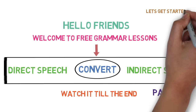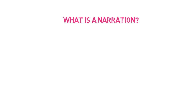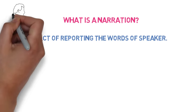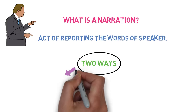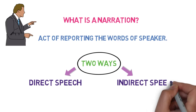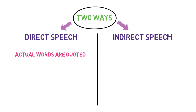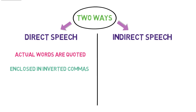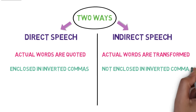Without further ado, let's get started. Let's first quickly remember what we learnt in our previous video. Narration is the act of reporting the words of a speaker — that is, how you are representing the way a person has spoken. There are two main ways of reporting the words of a speaker: first, direct speech, and second, indirect speech. In direct speech, the actual words of the speaker are quoted as-is without any change, and the exact words are enclosed in inverted commas or quotation marks. In indirect speech, the actual words of the speaker are transformed and they are not enclosed in inverted commas; instead, they are written in simple language.